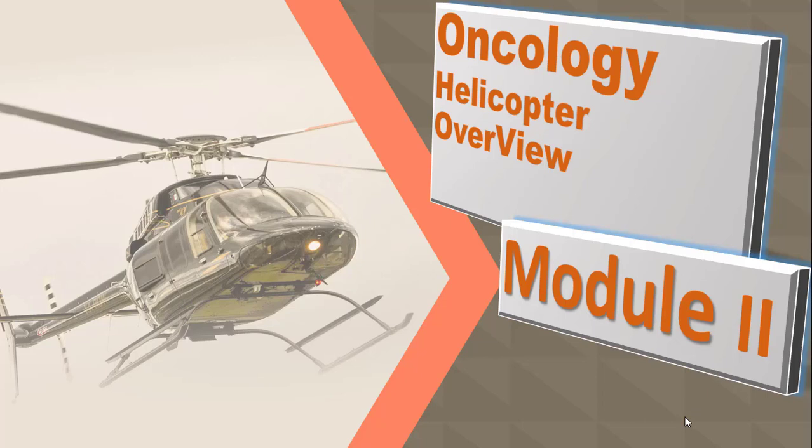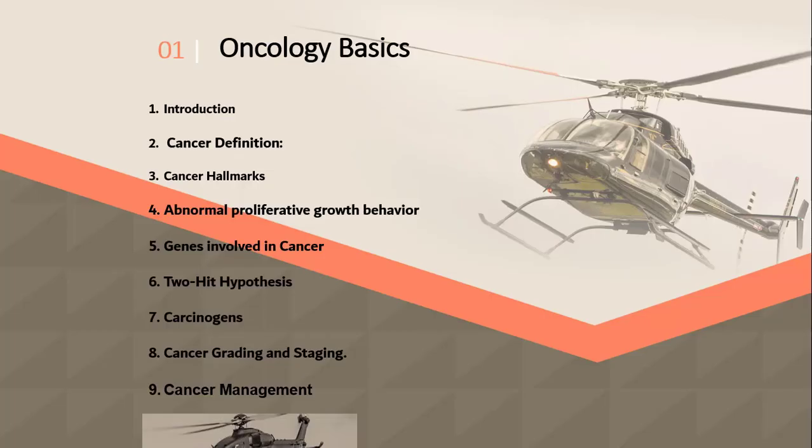Now we're going to discuss Oncology Helicopter Overview, Module 2. In Module 1, Oncology Basics, we discussed the introduction, cancer definition, cancer hallmarks, abnormal proliferative growth behavior, genes involved in cancer, and two-hit hypothesis, carcinogens, cancer grading and staging, and cancer management.